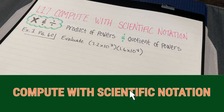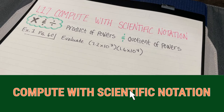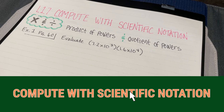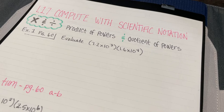Today's lesson is 1.7: Computing with Scientific Notation. We're going to start out with multiplying and dividing with scientific notation. When we do this we need to remember our product of powers and our quotient of powers rules. The first problem is example number one on page 60, so if you want to have your book out and follow along, please go ahead.